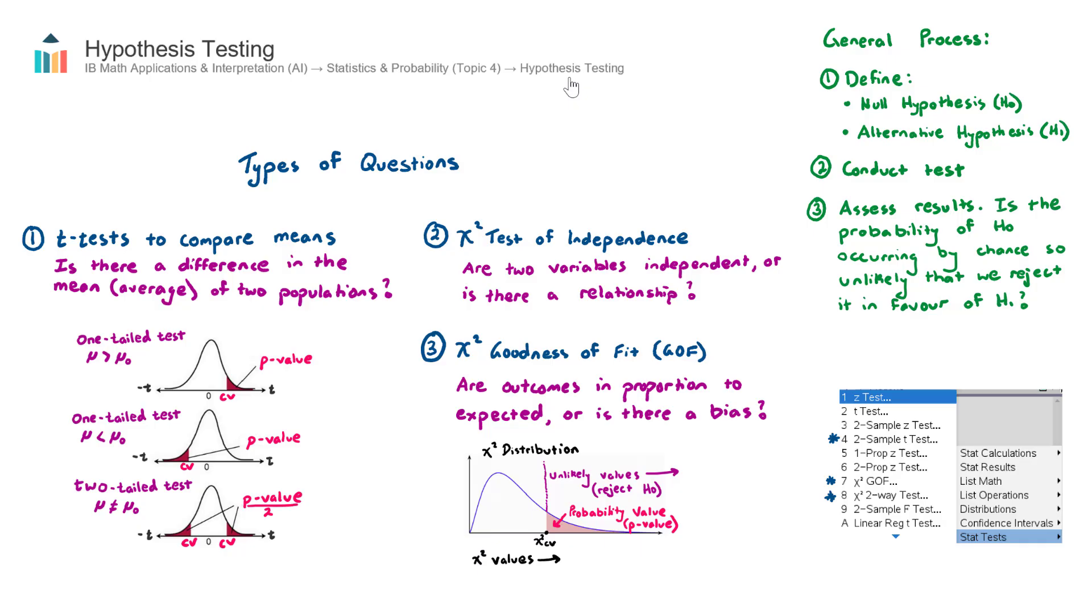Okay, so in the SL and HL course, you'll encounter three types of hypothesis testing questions. And they are conducting t-tests to compare the means of two populations.